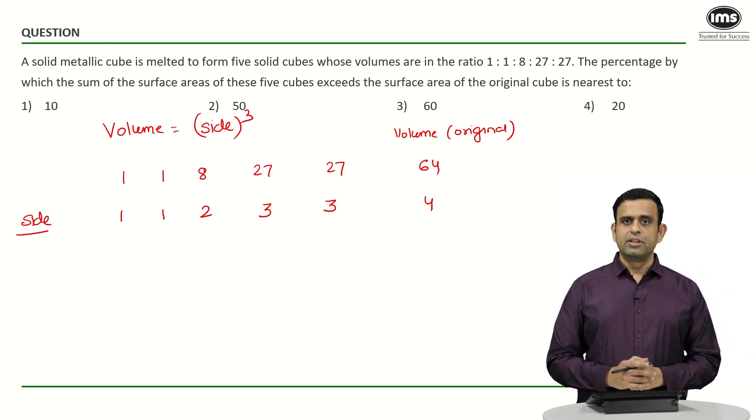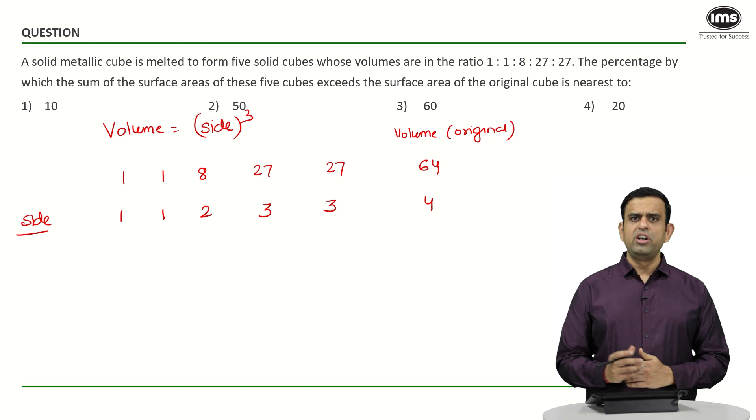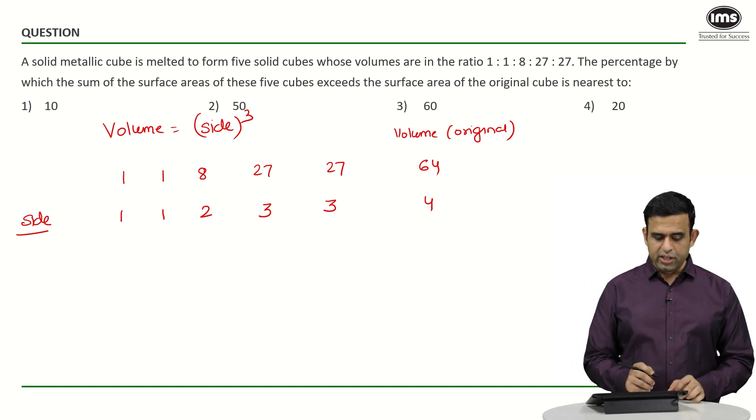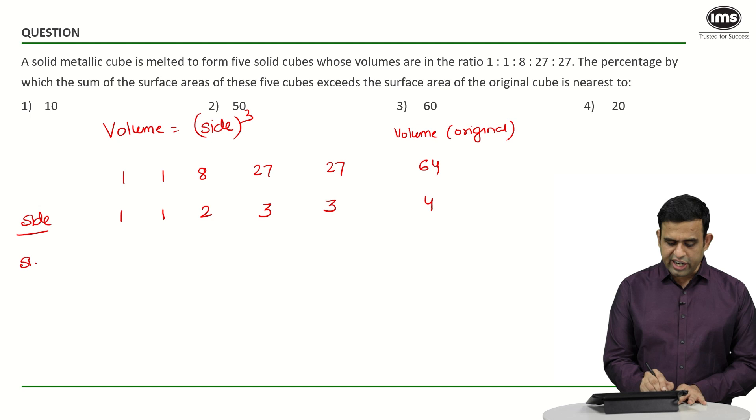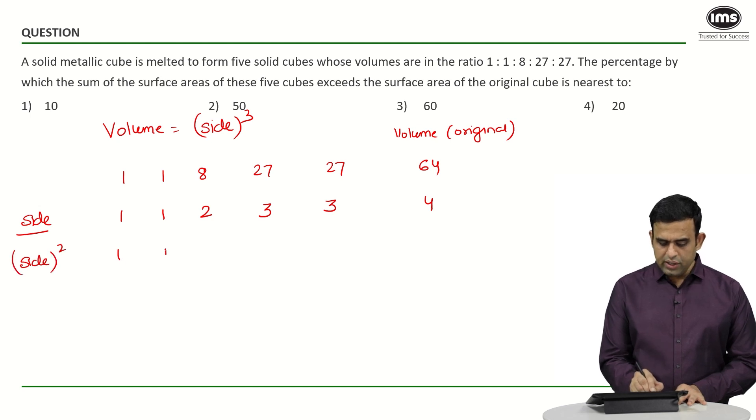Now what about the surface area? The surface area of the cube depends on the square of the sides. In this case, the side squares will be 1, 1, 4, 9, and 9.